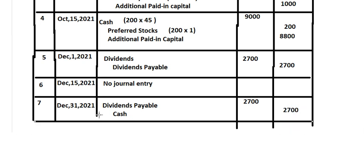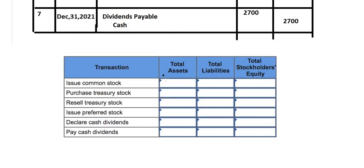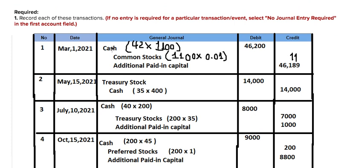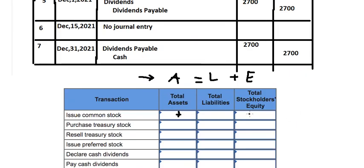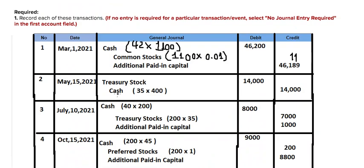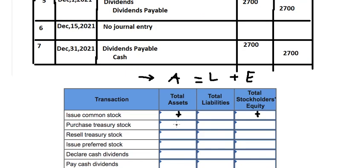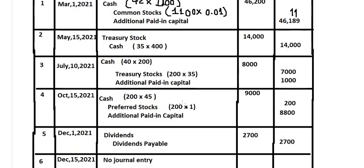For question number two, we use the basic accounting formula: Assets = Liabilities + Equity. For the issue of common stock, cash increases, so assets are positive. For purchasing treasury stock, cash decreases, so assets reduce. When we resell treasury stock, we increase cash (assets) and increase equity. Issuing preferred stock is similar to issuing common stock.